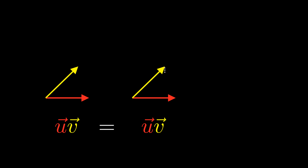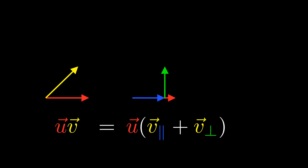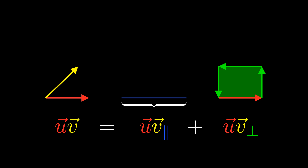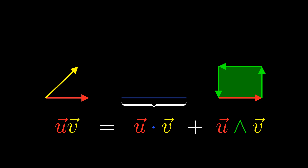To multiply two arbitrary vectors, we can take a perpendicular line and use it to split v into two parts — one which is parallel to u and the other which is perpendicular to u. At this point we can distribute. The first term is the product of two parallel vectors, which we know is the product of their lengths, and the second term is the product of two perpendicular vectors, which we know is this bivector. Notice that we can think of this as splitting the product into two pieces: one where we multiply u with the part of v that is inside u, and the other where we multiply u with the part of v that is outside u. Thus, we call these two parts the inner and outer products.